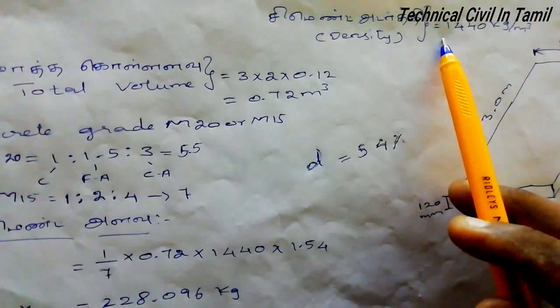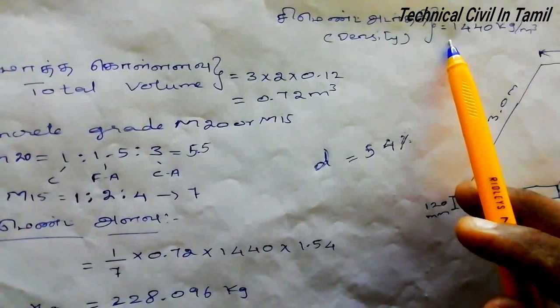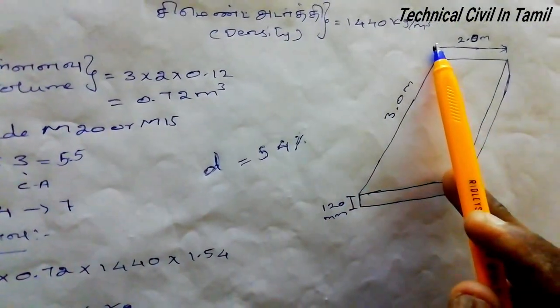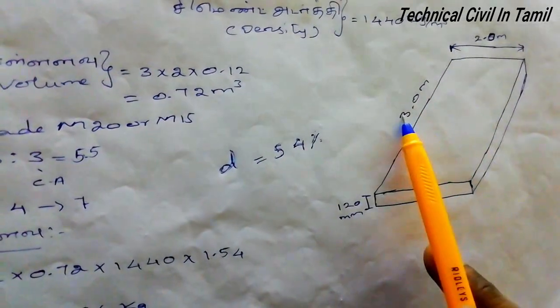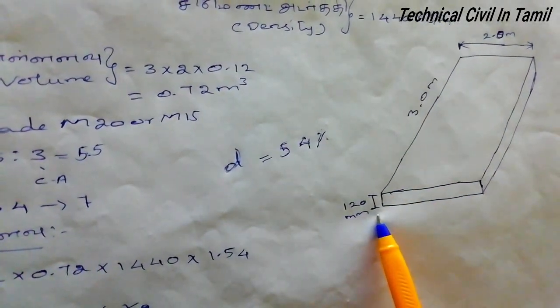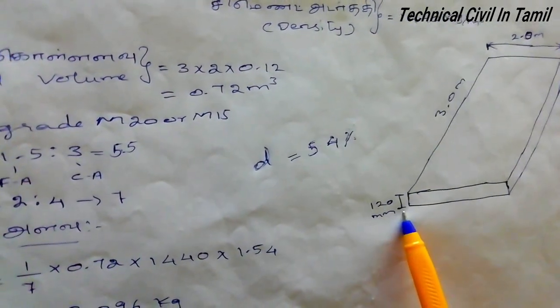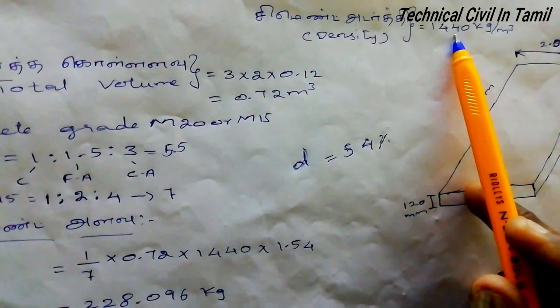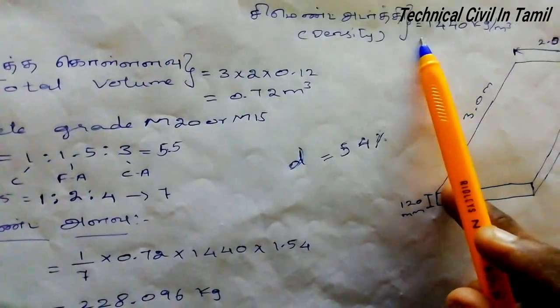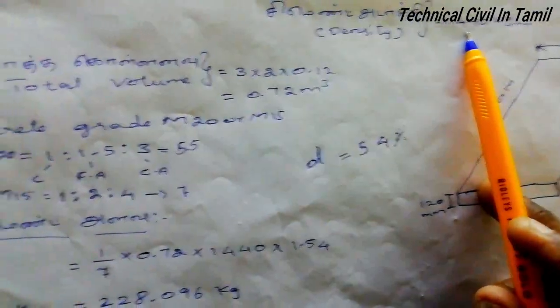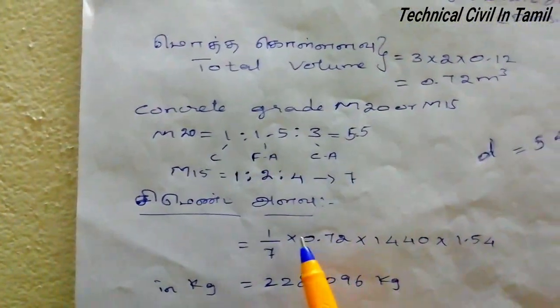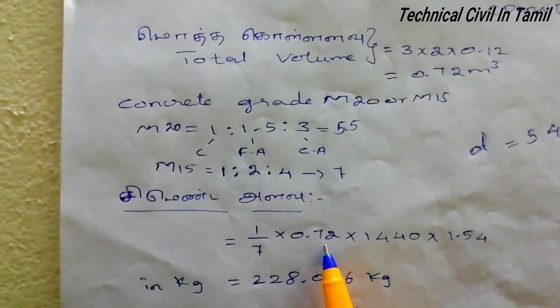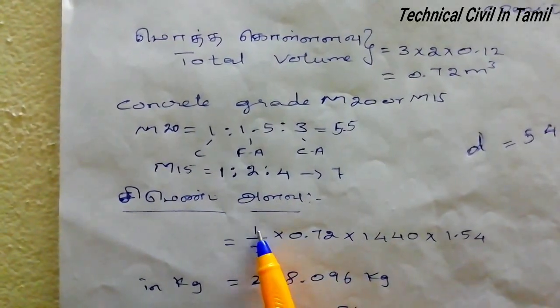So for 1 cubic meter, you can add 1 part cement, which equals 440 kg. This is the density of cement. For 1 cubic meter, the cement quantity is 440 kg.